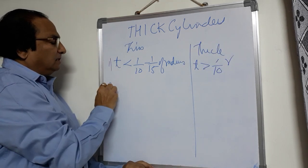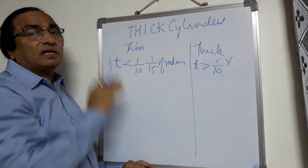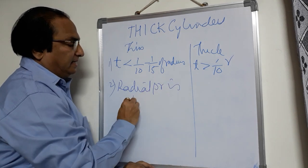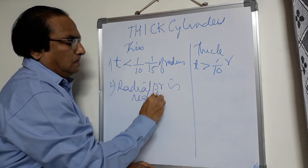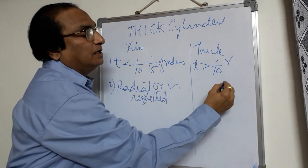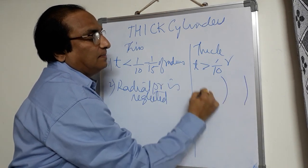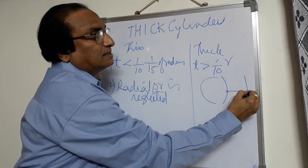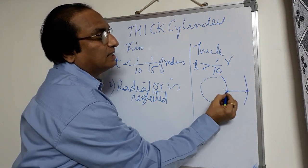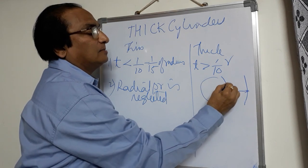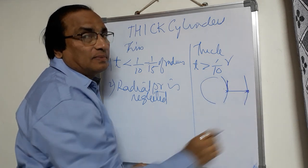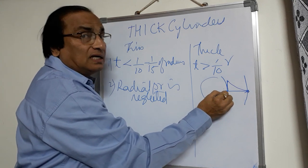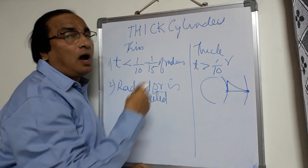In case of thin cylinder, whatever radial pressure — the internal pressure that is acting — radial pressure is neglected. Whereas in case of thick cylinder, if you see the thickness of the cylinder, it is observed that this is the inner thickness and this is the outer layer. The hoop radial pressure is maximum on the inner face and as you go outside it will become zero. So the radial pressure is maximum on the inner thickness and it will be minimum or zero on the outer thickness.